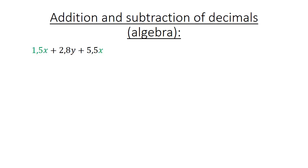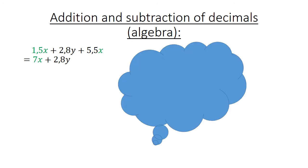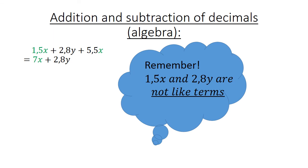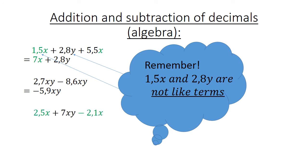Algebra with decimals: 1,5x plus 2,8y plus 5,5x equals 7x plus 2,8y. Remember, 1,5x and 2,8y are not like terms. Next example: 2,7xy minus 8,6xy equals negative 5,9xy — they are like terms, so you can subtract. For 2,5x plus 7xy minus 2,1x: add the 2,5x and subtract 2,1x from it, giving 0,4x plus 7xy.